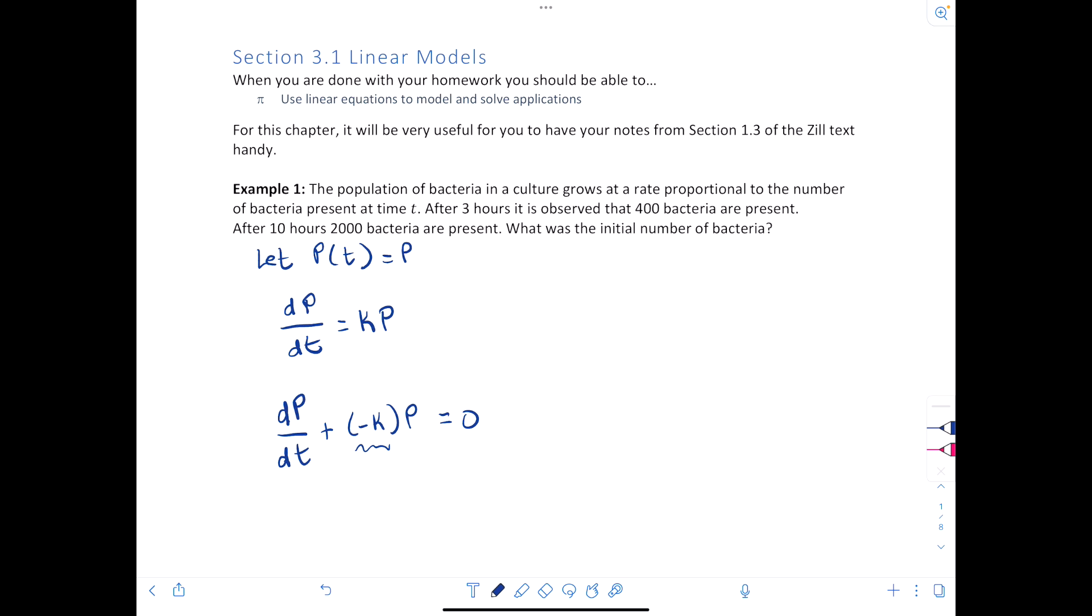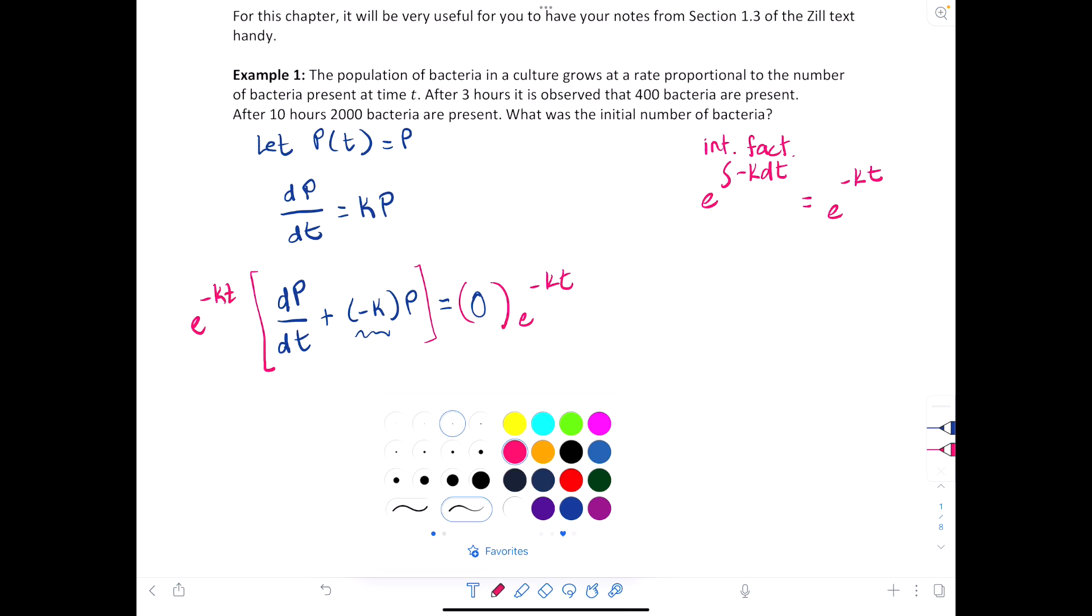We use the coefficient of P to find our integrating factor. Our integrating factor, because it's linear in form, is e to the integral of negative k dt, which will just be e to the negative kt. Multiplying both sides by that integrating factor, on the left side we will end up getting...